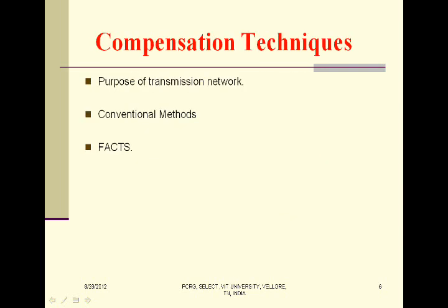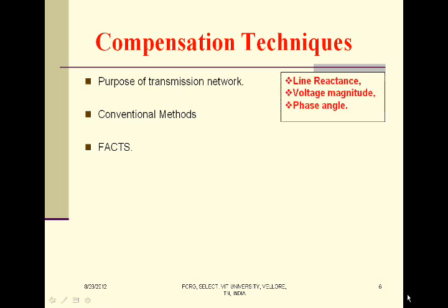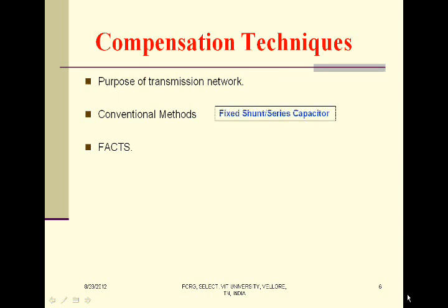The purpose of the transmission network is to transfer power from generating stations to the consumer. In order to improve the real and reactive power flow in the transmission network, we have three quantities: line reactance, voltage magnitude, and phase angle. In earlier days, we had two forms of compensators — fixed shunt capacitors and series capacitors — mechanically operated. But nowadays, after the advent of power electronic devices from 1970 onwards, we have the new technology of flexible AC transmission system, or FACTS, devices. These are a combination of power electronic devices along with capacitors and inductors.